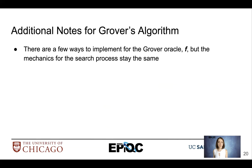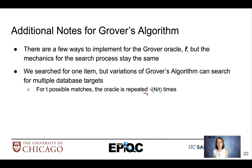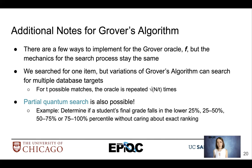Additional notes for Grover's algorithm: there are a few ways to implement the Grover oracle f, but the mechanics for the search process stay the same. We searched for one item here, but there are variations of Grover's algorithm that can search for multiple database targets. If we have t possible matches, the oracle is repeated √(N/t) times. There's also the ability to do partial quantum search — for example, determining if a student's final grade falls into a certain percentile without caring about the exact ranking of that student.